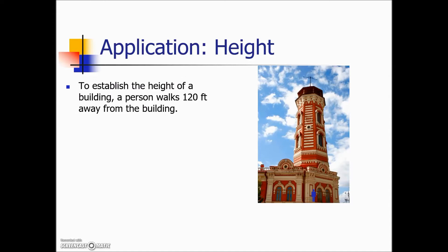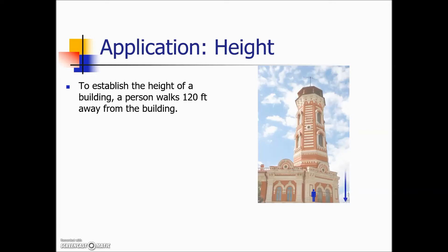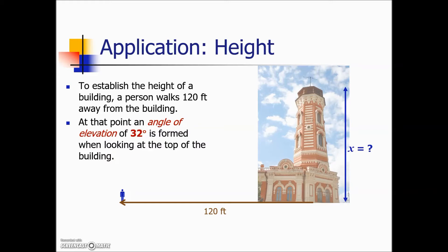Here's another example to establish the height of a building a person walks 120 feet away from the building. The height and the distance away horizontally are at right angles to one another. At that point an angle of elevation and what we're talking about with an angle of elevation is the angle made from a horizontal line up to the line of sight to an object is 32 degrees. You can see here we have the basis of a right triangle labeling the sides of this triangle using the 32 degree angle of elevation as a reference angle. We're looking for the opposite and we do know the adjacent because of walking away from the building.